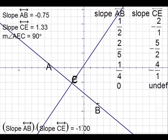The slope of line CE, 1.33, is the mixed number 1 and 1/3. If we rewrite that as an improper fraction, it's 4 over 3.